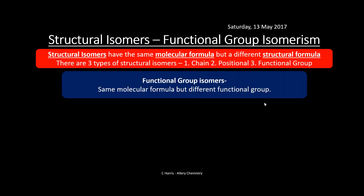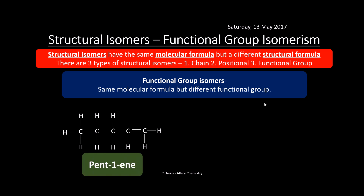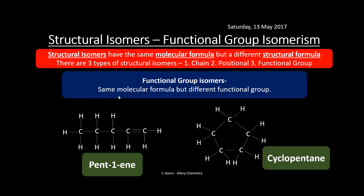Functional group isomers have the same molecular formula but a different functional group. For example, pent-1-ene has five carbons and ten hydrogens with a double bond. A functional group isomer would have the same number of carbons and hydrogens but without the double bond — that could be cyclopentane, which has the same molecular formula but the functional group has changed.